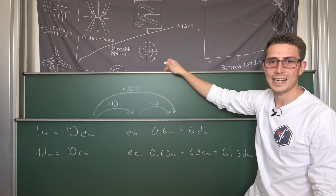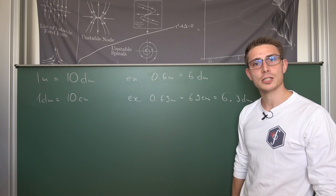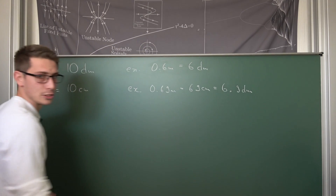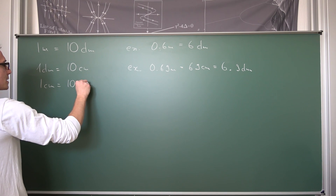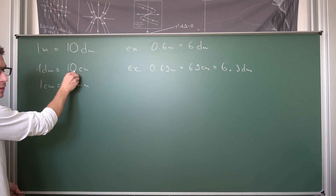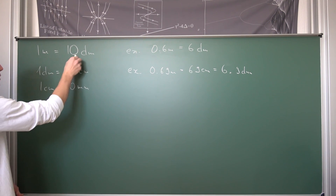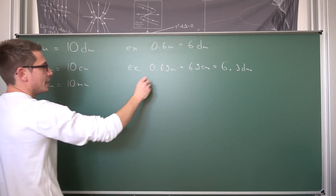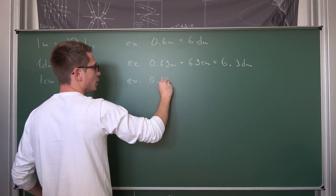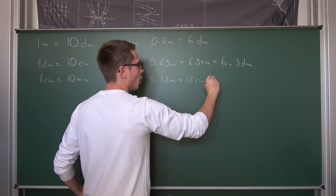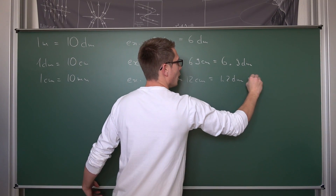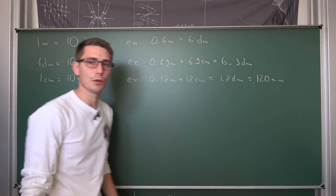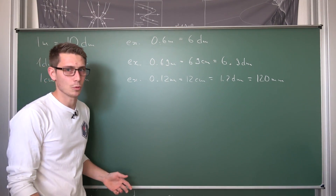Now we take a look at the next lower unit from centimeters: the so-called millimeters. The prefix 'milli' means a thousandth of the base unit, meaning there are 10 millimeters in one centimeter. So 10 centimeters equals 100 millimeters, which is one decimeter. And 10 decimeters equals 1,000 millimeters, which is one meter. For example, 0.12 meters equals 12 centimeters, or 1.2 decimeters, or 120 millimeters. Millimeters are a unit you will use a lot — especially when looking at the thickness of a piece of wood — so do not forget about these.